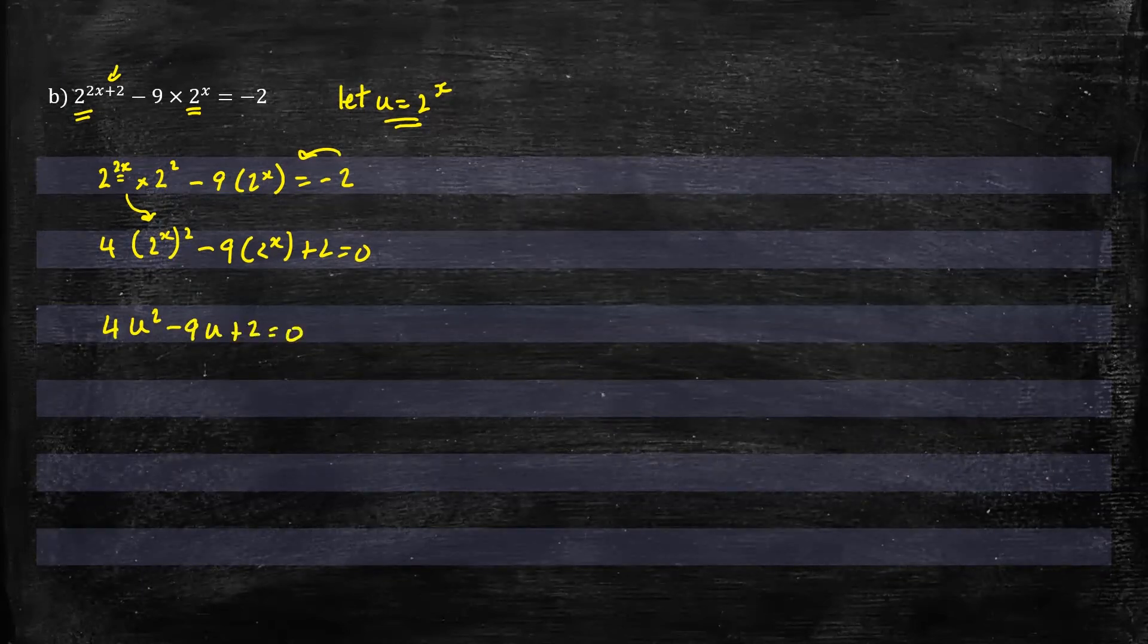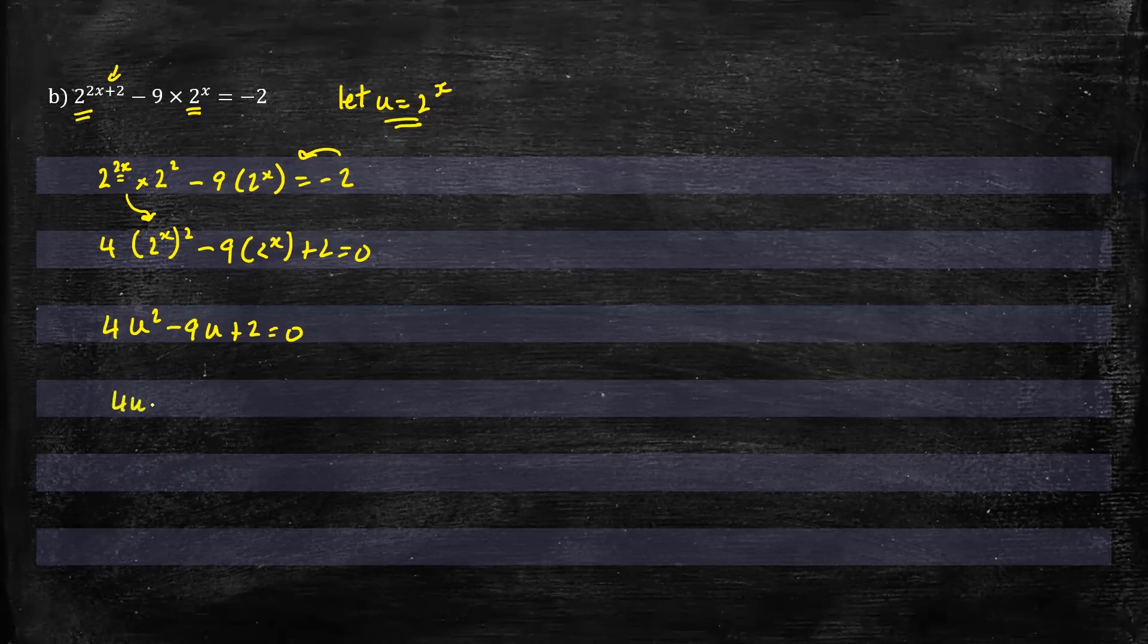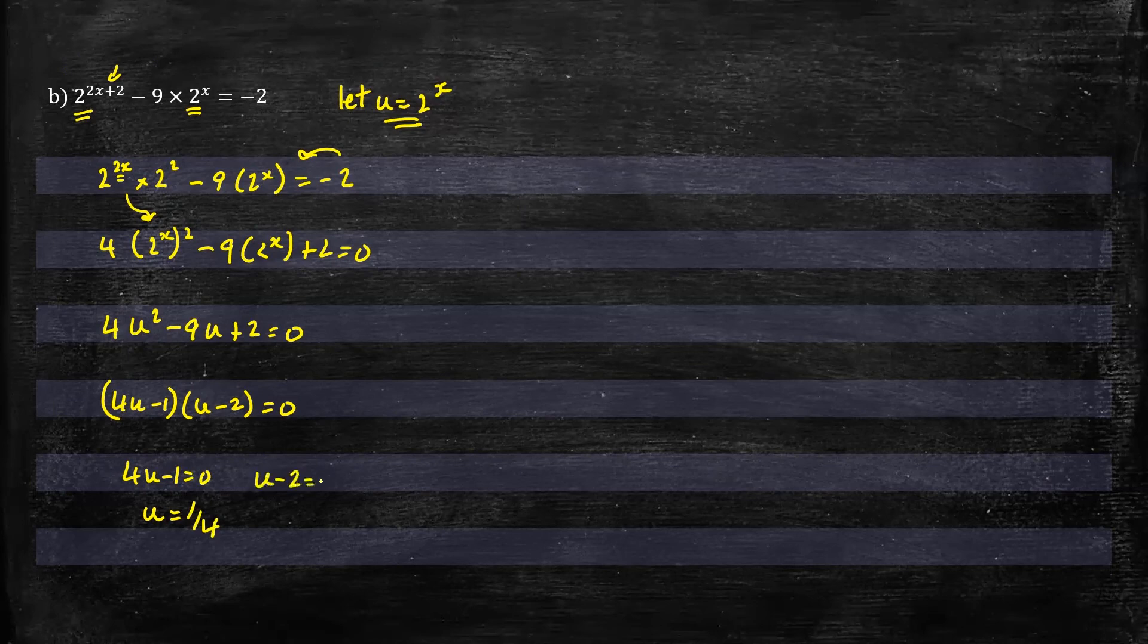And when we factorize that we'll get (4u minus 1)(u minus 2) equals 0. So we can solve these two factors for u. So 4u minus 1 equals 0, therefore u will be 1/4. On the right side, u minus 2 equals 0, so u will be 2.